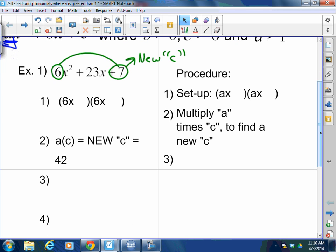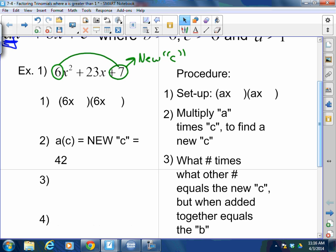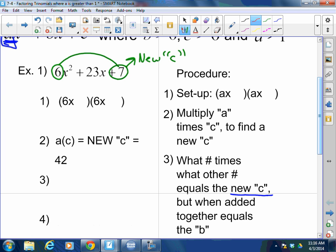Step 3, just like before. But this time, instead of using the original c, you are using the new c. What times what equals the new c, but when added together equals the b. What times what equals 42, but when added together is 23? 21 times 2. 21 times 2 is 42, and 21 plus 2 is 23.